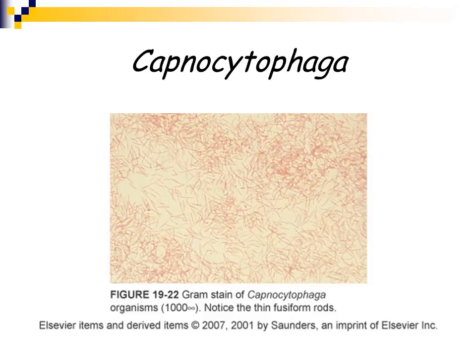Here are the long, slender gram-negative rods of Capnocytophagia. We're now going to move on to the fourth part of the fastidious gram-negative rod lecture.